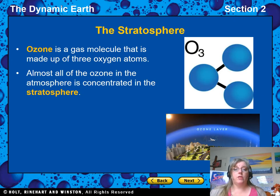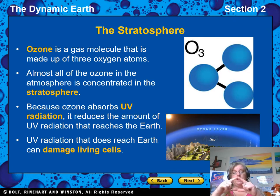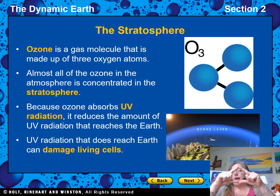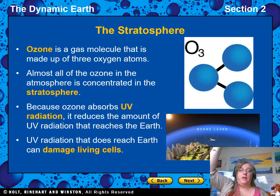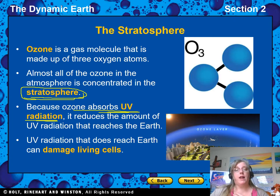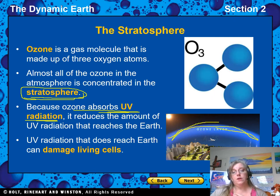Ozone is actually three oxygen molecules stuck together in a triangle shape — O3. O2 is what we breathe; it's two oxygen molecules stuck together like a dumbbell. Ozone, stuck in a triangle, is actually poisonous to us. Almost all of the ozone on Earth is located in the stratosphere, where it absorbs UV radiation. The ozone layer absorbs 95% of the Sun's ultraviolet rays, so it acts like a natural sunscreen for the planet.